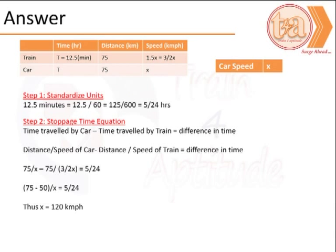To find the answer, we look at the information that is given. If we assume the speed of the car is X, the speed of the train would be 1.5 X or 3 by 2 X. If the time taken by the car to reach the destination would be T, that is 75 km to be T, then the train would take T minus 12.5 minutes to reach the same distance.